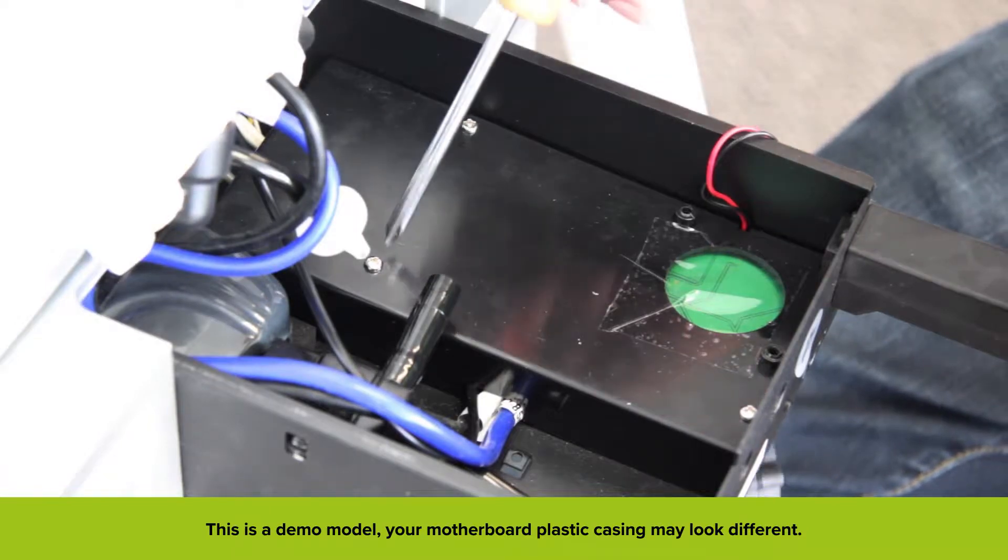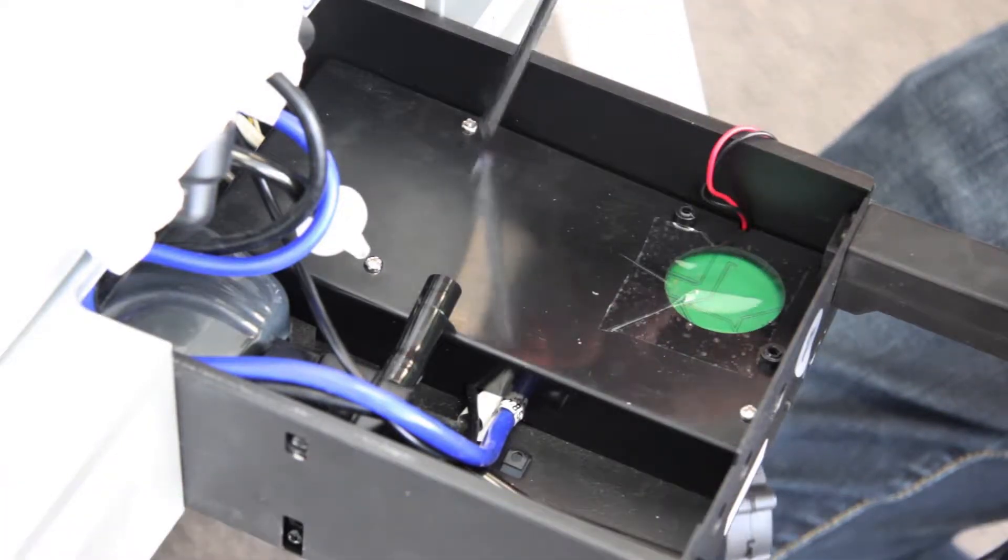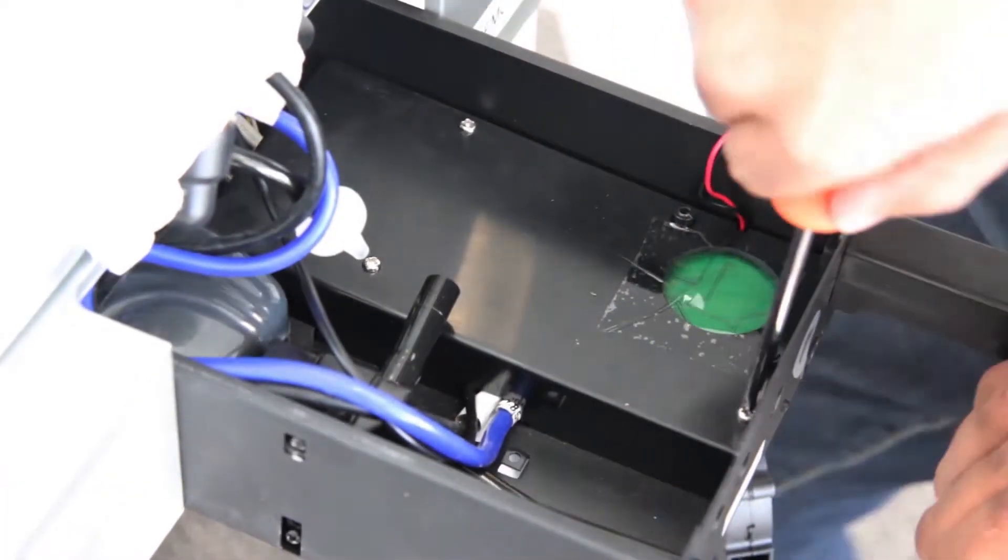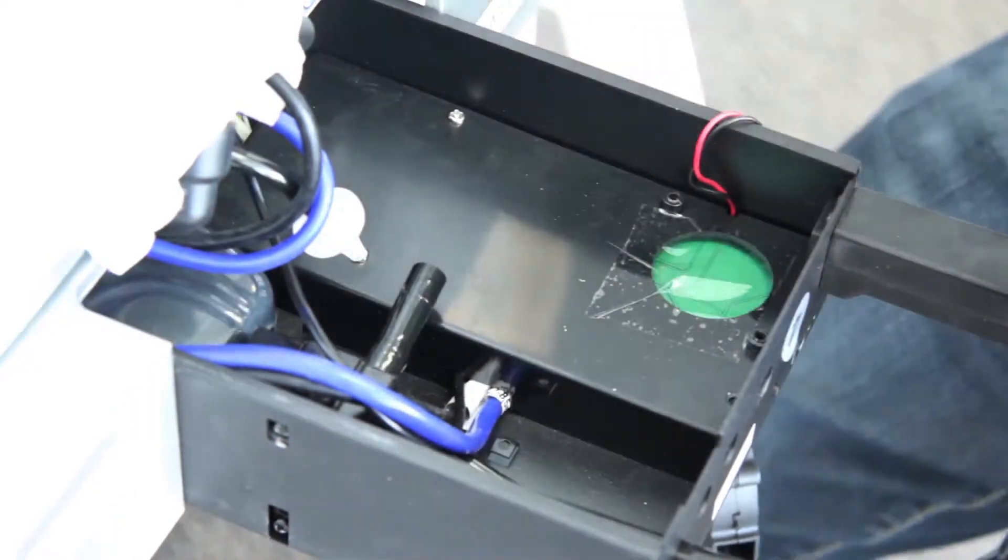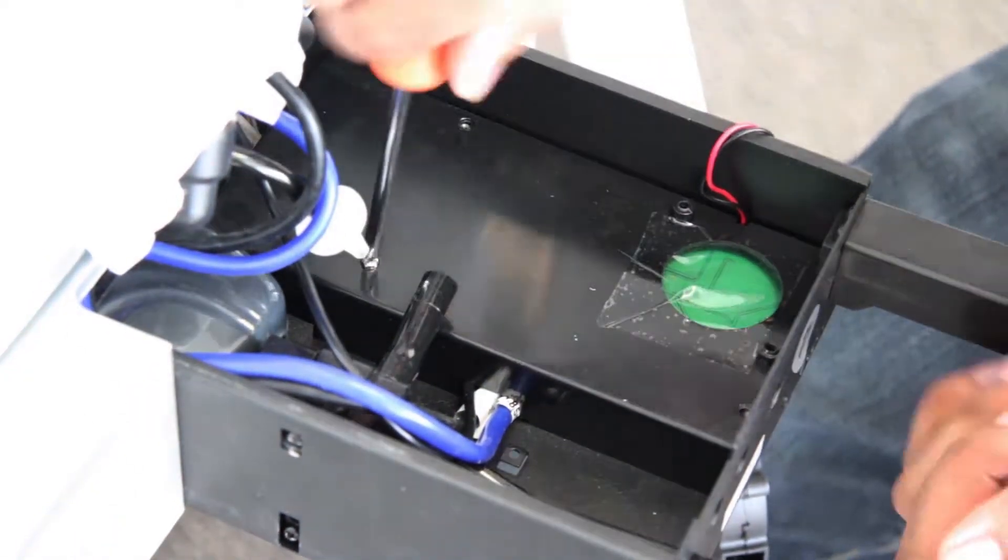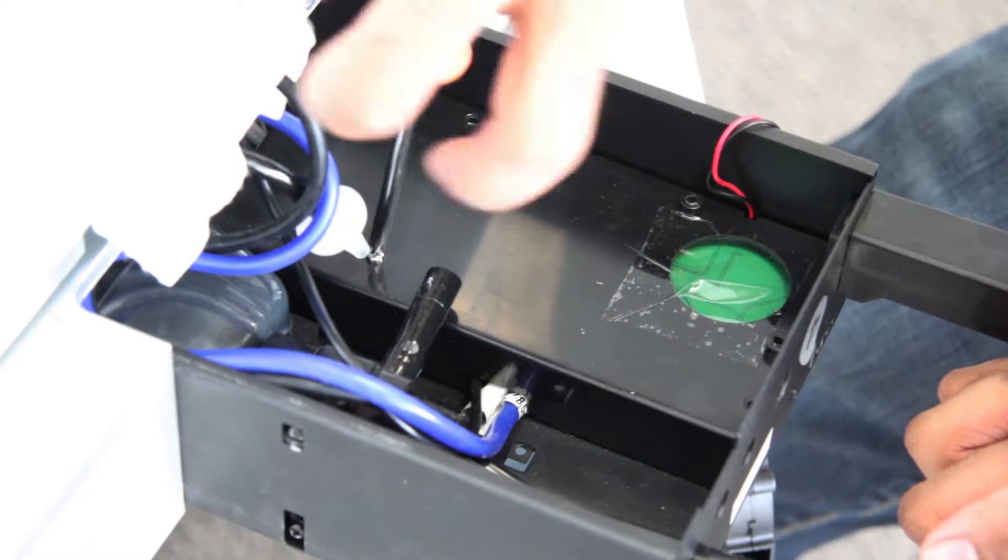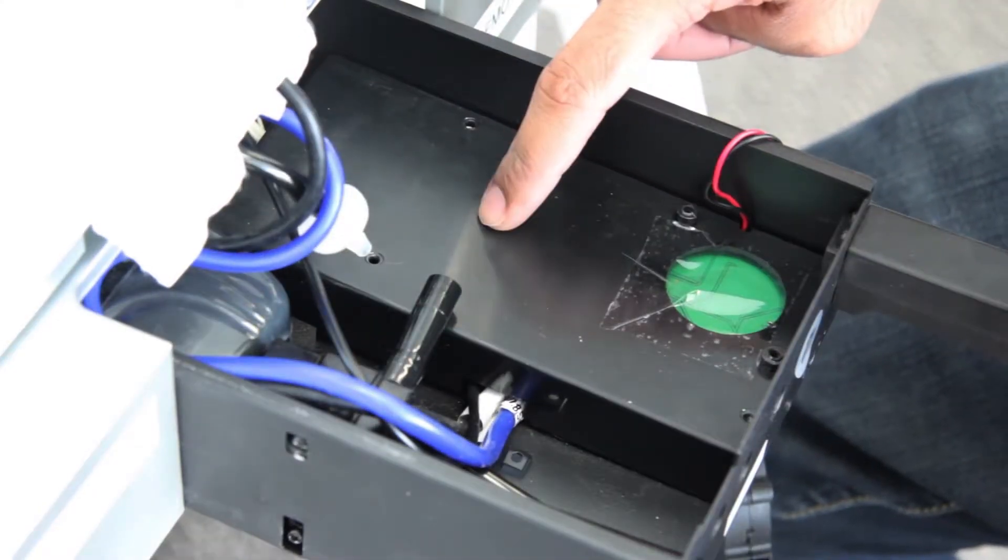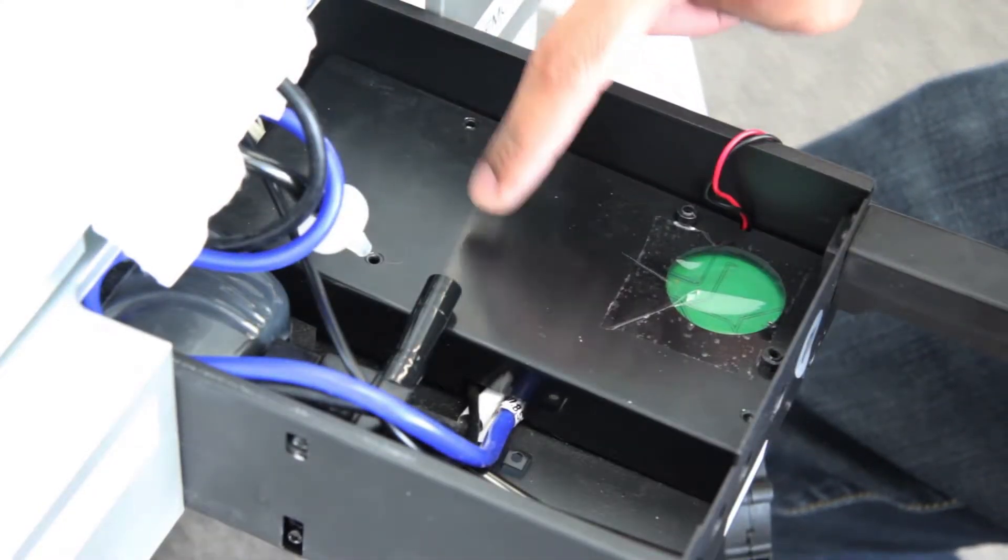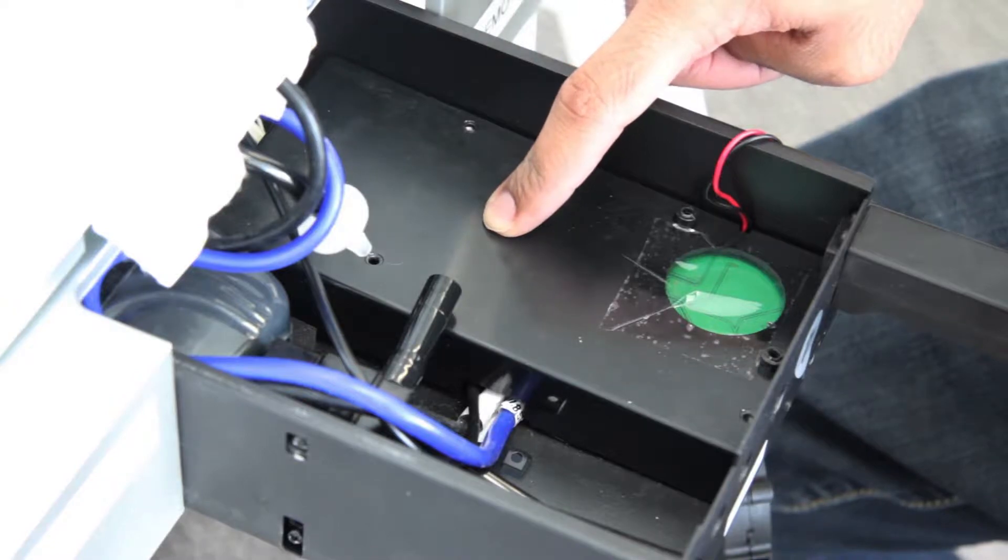Next, we must remove these three screws off of the protective plastic casing. Now we will be removing this protective plastic case. Removing this case is a bit tricky, so follow my lead.